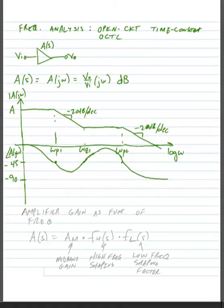So in general, we can write our amplifier gain as a function of frequency. We might have our total amplifier gain, A(s), is equal to A sub M, which is our mid-band gain, times a couple of frequency shaping factors, FH(s), which is a high frequency shaping factor, times FL(s), and this will be a low frequency shaping factor.